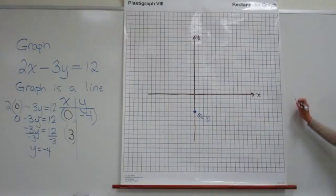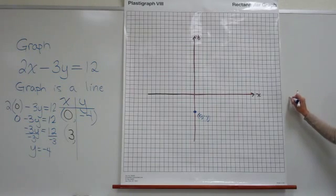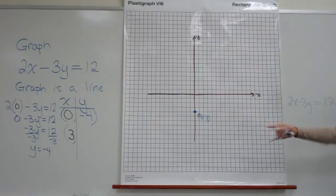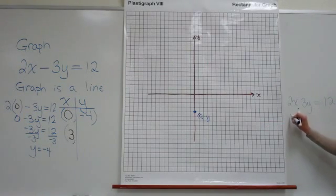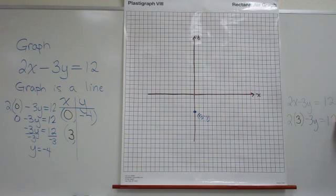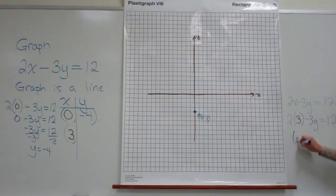We have our original equation is 2x minus 3y is equal to 12. We're now choosing an x value of 3. So we have 2 times, take out the x and put in 3 this time, minus 3y is equal to 12. And then use our equation solving skills to find out what the y value is here. So we'll multiply our 2 times our 3. We get 6 minus 3y is equal to 12.